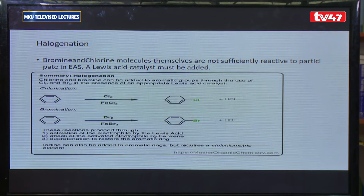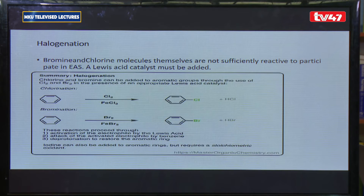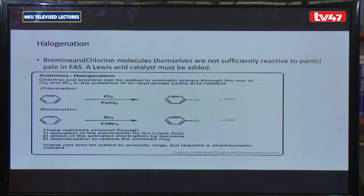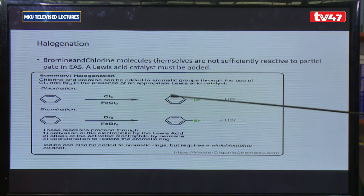Halogenation involves the addition of group 7 elements — fluorine, chlorine, bromine, or iodine. Fluorine, being the most electronegative element, has the capacity to polarize the ring directly, so it is not a good example for illustrating electrophilic substitution. The best examples of electrophilic aromatic substitution are therefore bromination and chlorination.